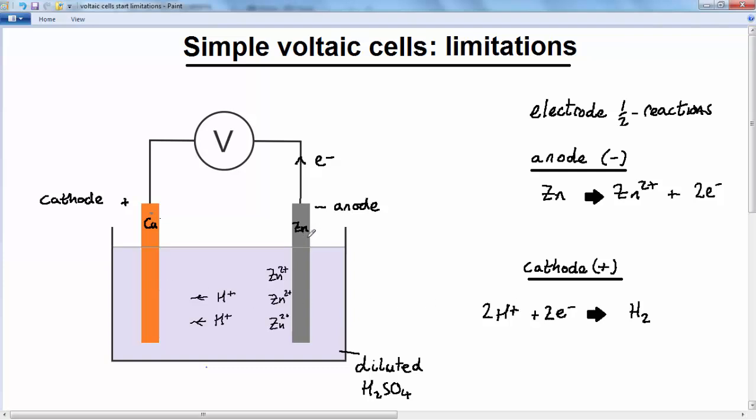So we've got oxidation at the anode, reduction at the cathode. So the hydrogen ions are repelled towards the cathode. They pick up an electron, become hydrogen gas, and this is where the problem starts.